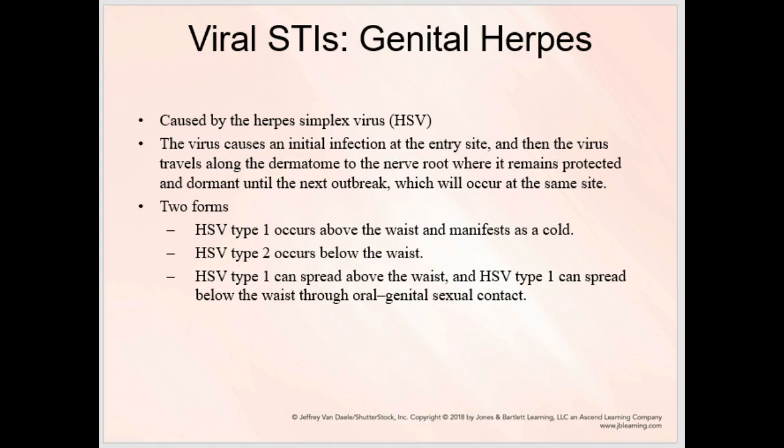So let's talk about viral STIs, or genital herpes, for example. This is going to be from herpes simplex virus, and there are different types. The interesting thing with this virus is it travels along nerves along what are called dermatomes. It's the superficial innervation to the skin, and it will travel to the nerve root or actually stay dormant until the next outbreak, which will occur at the same site.